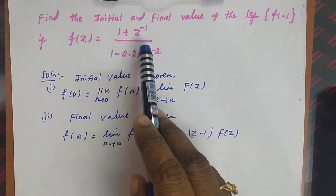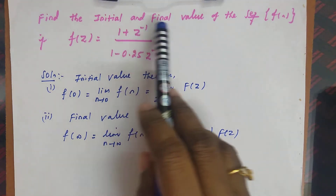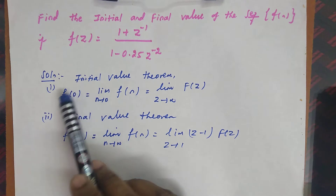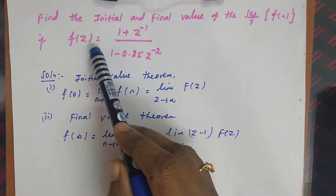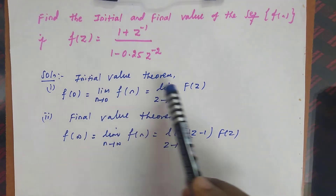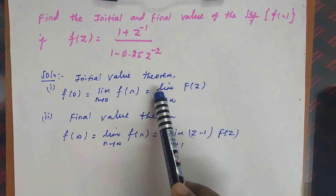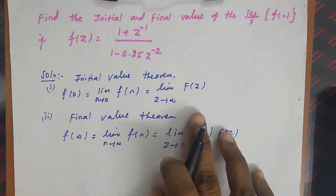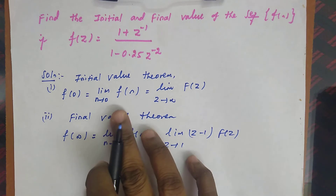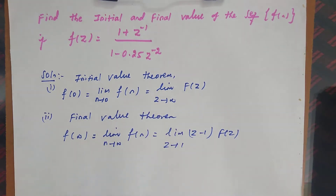In this question we need to find f(0) and f(∞) for the given F(z). By the initial value theorem, f(0) equals the limit as n tends to 0 of f(n), which equals the limit as z tends to infinity of F(z). This is our initial value theorem.